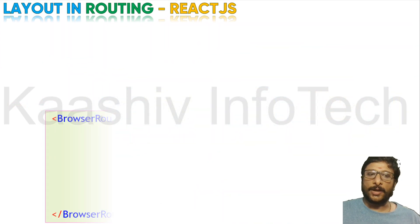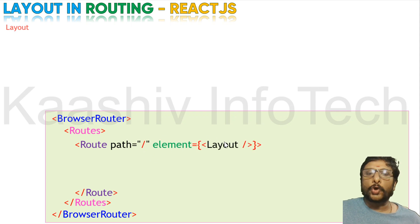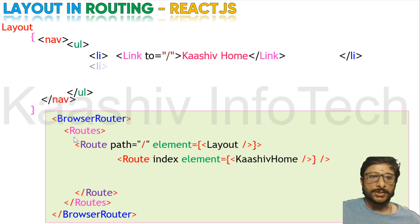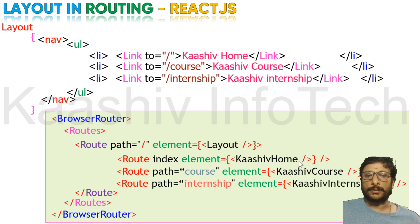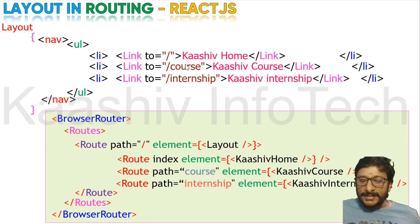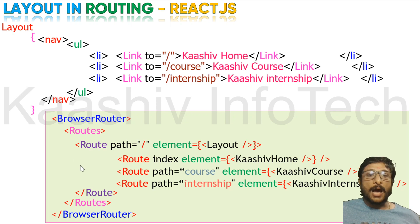This piece of code connects your layout and your path. You have the path slash loading the layout element. For the homepage, you need a path. Everything must be placed under BrowserRouter. Under Routes, you place individual Route components. Kashi home is displayed — clicking it goes to the index page and loads the element of Kashi home. For the course, path equals slash course loads the element Kashi course. For slash internship, it loads the Kashi internship content. This is the base routing code to connect the content, paths, and elements.